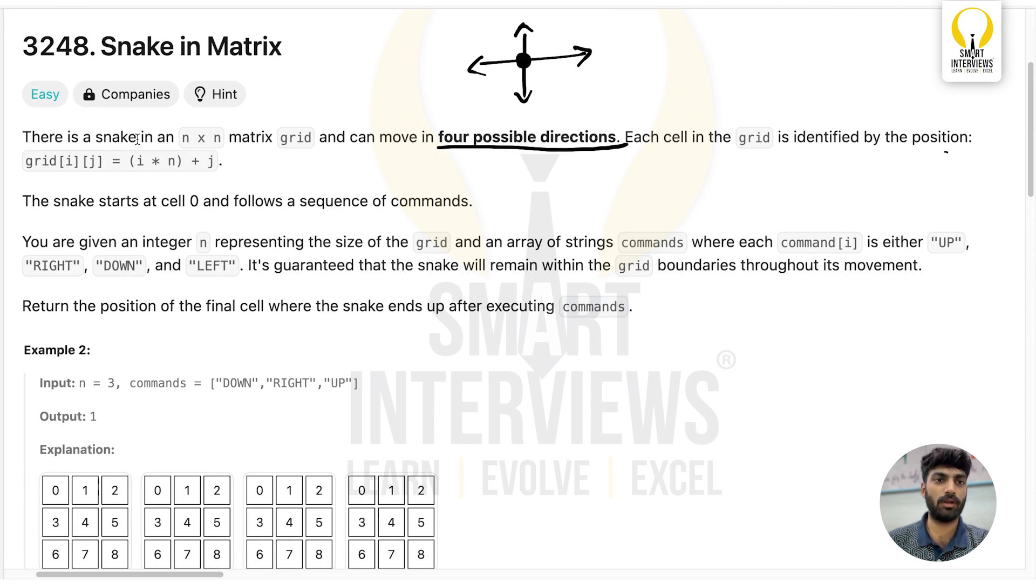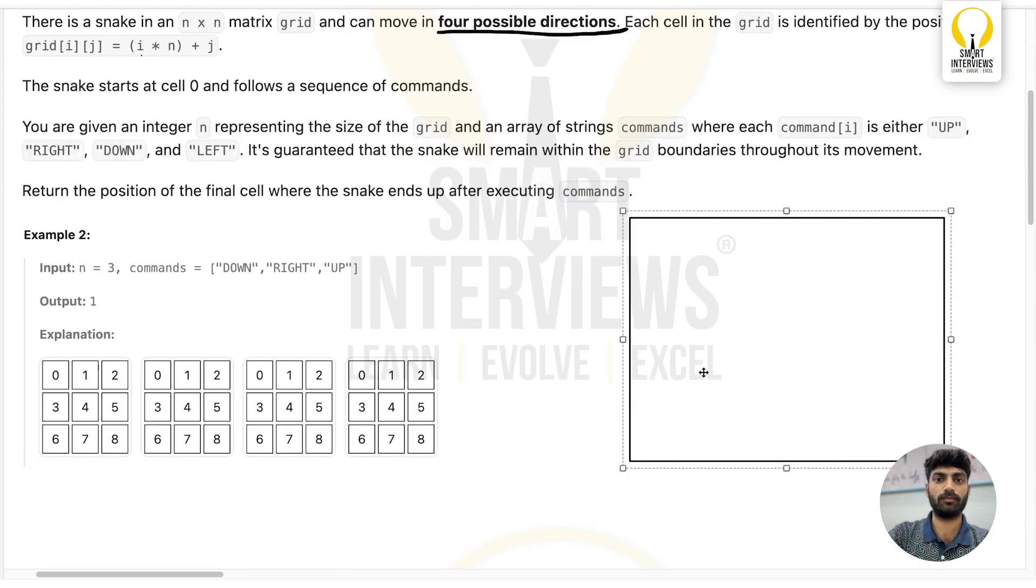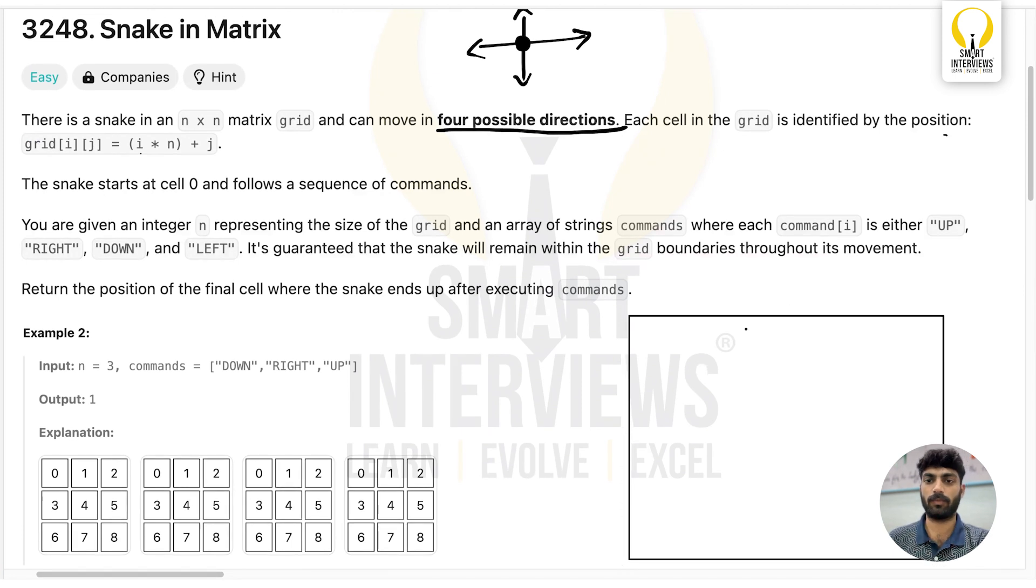In this grid, each position is identified as row number times n plus column number. Suppose you have a matrix like this, with rows 0, 1, 2, and 3, and these are the columns.